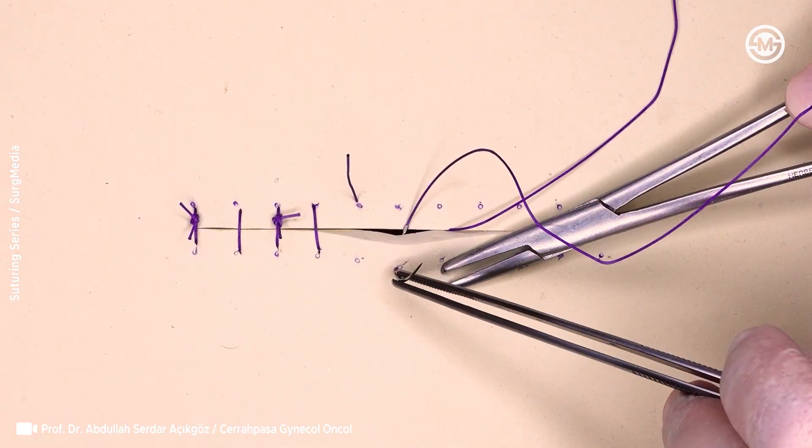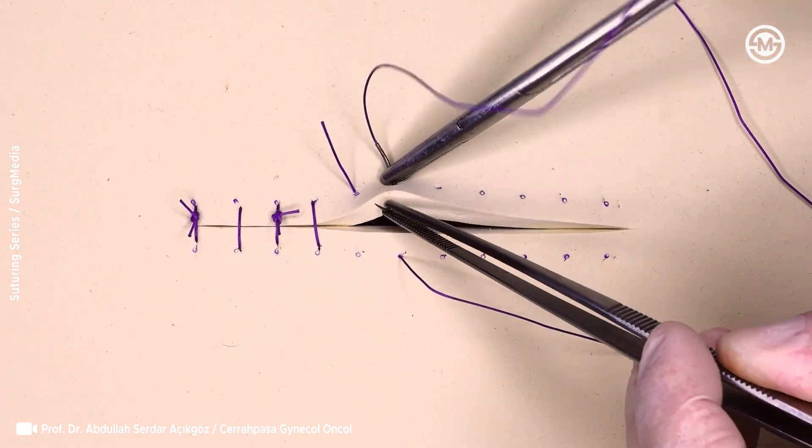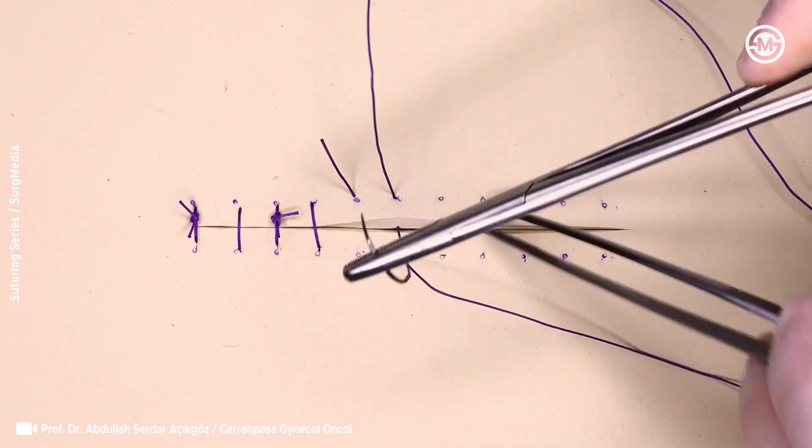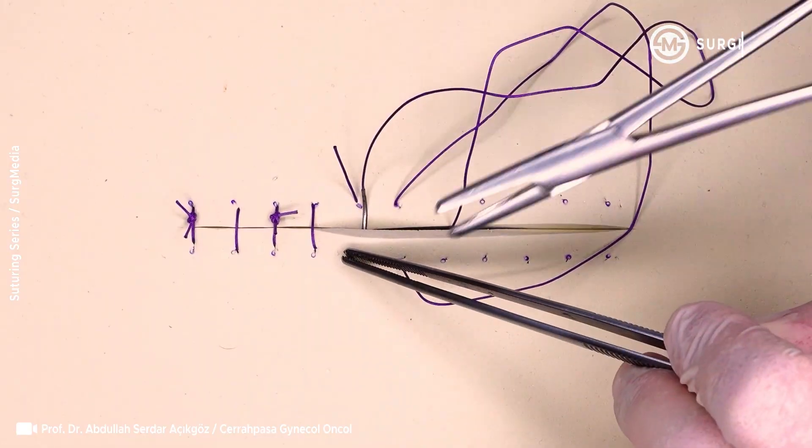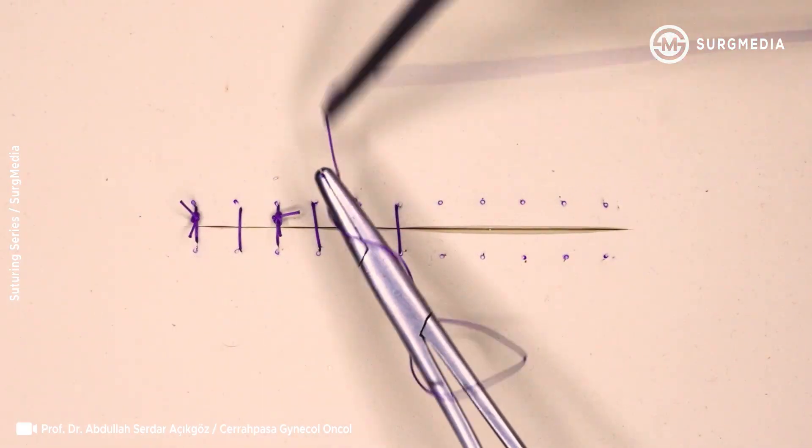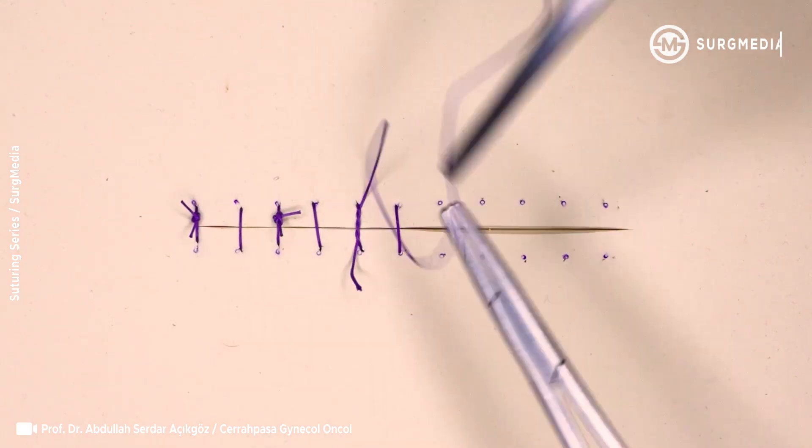Unlike a standard horizontal mattress suture, which depends on good tissue support between entry and exit points, the inverse figure of eight works especially well for closing small circular defects, like those from punch biopsies or for closing defects in fragile, friable tissue.